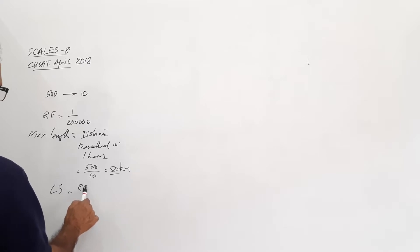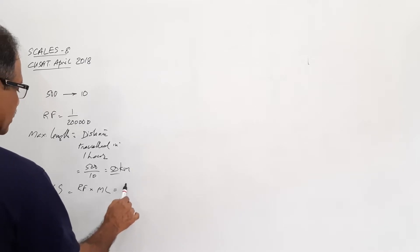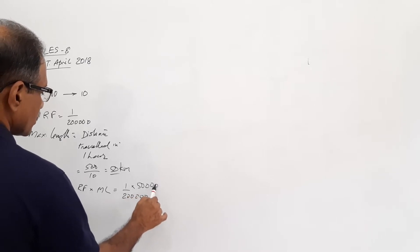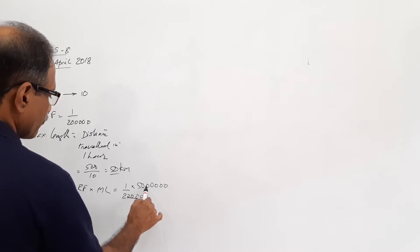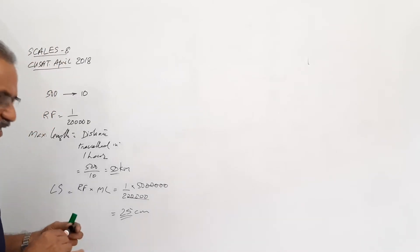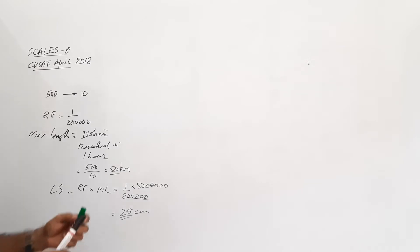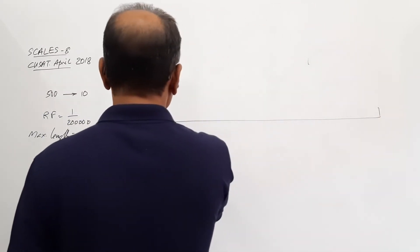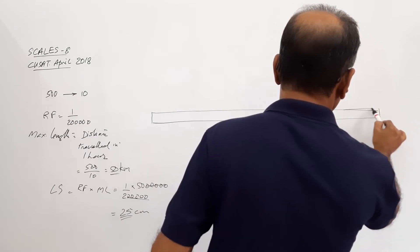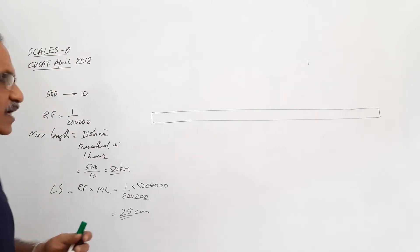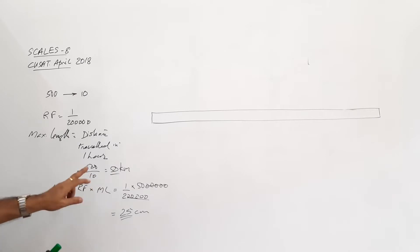Now, length of scale equals RF into maximum length, equals 1 by 2 lakh into 50 km. So you get the length of scale is 25 cm. I draw a rectangular strip whose length is 25 cm. What does it represent? It represents the distance traveled in 1 hour, which is 50 km.